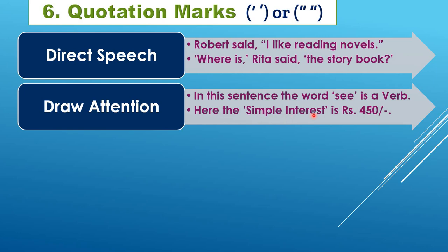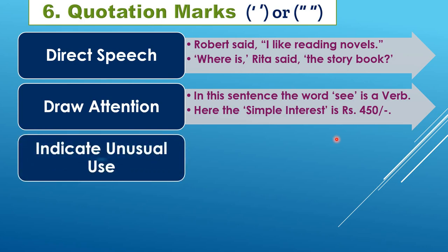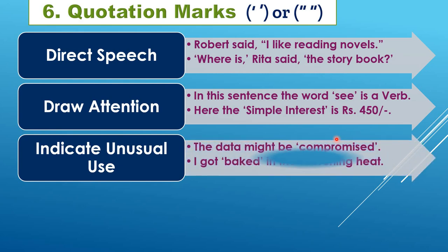Quotation marks are used to indicate an unusual use of a word. For example: 'The data might be "compromised"' — to highlight the word 'compromised.' Or 'I got "baked" in the scorching heat' — we don't literally get baked, but it's an unusual use of the word, so it's put in quotation marks. You may or may not do that; it is optional.